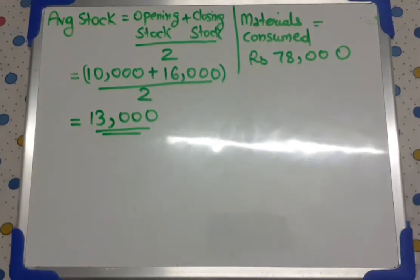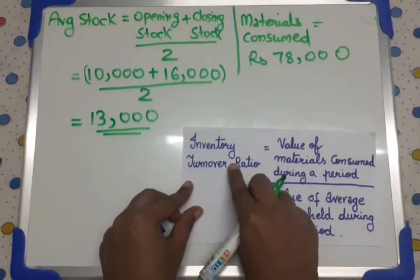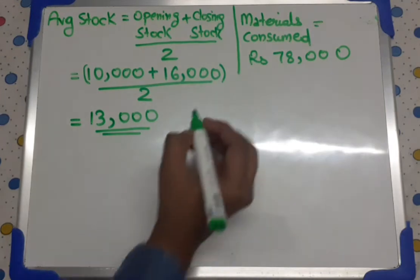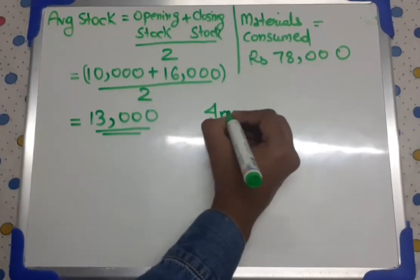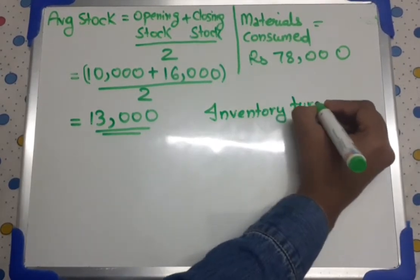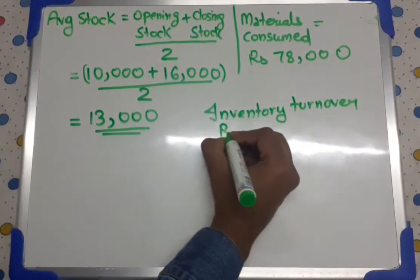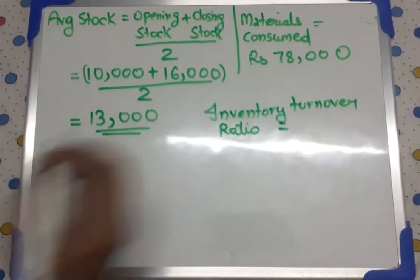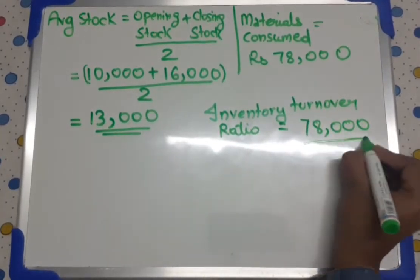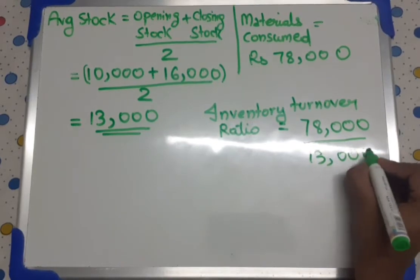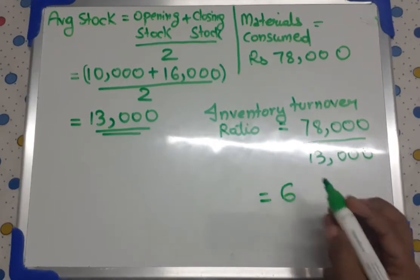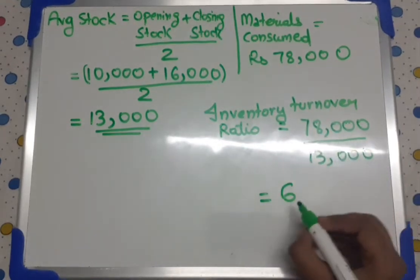Now we found out both the requirements to calculate inventory turnover ratio. The inventory turnover ratio is equal to 78,000 divided by 13,000, which equals 6. So the inventory turnover ratio is 6 times.